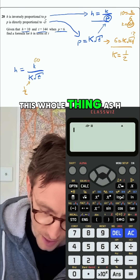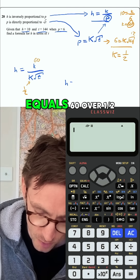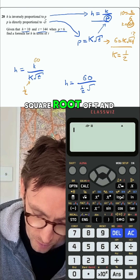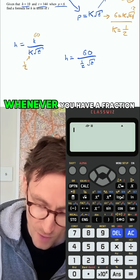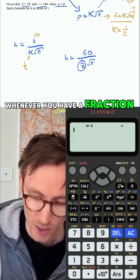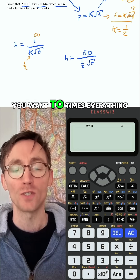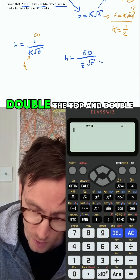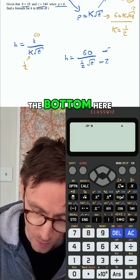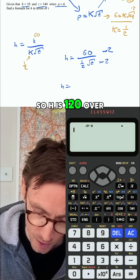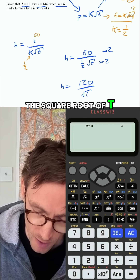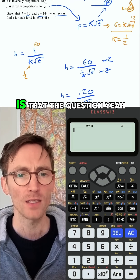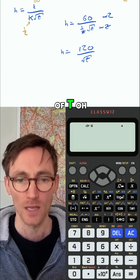So now I can rewrite the whole thing as h equals 60 over a half times the square root of t. Whenever you have a fraction inside a fraction, you times everything by the bottom of that fraction — so I double the top and double the bottom. That gives h equals 120 over the square root of t, because the two twos cancel. And the question asked for the formula for h in terms of t — so that's actually the answer.